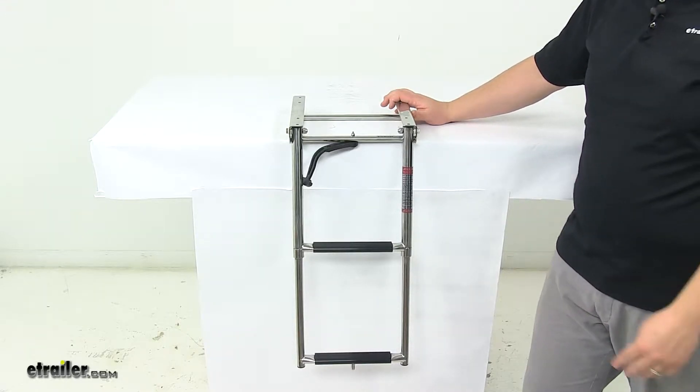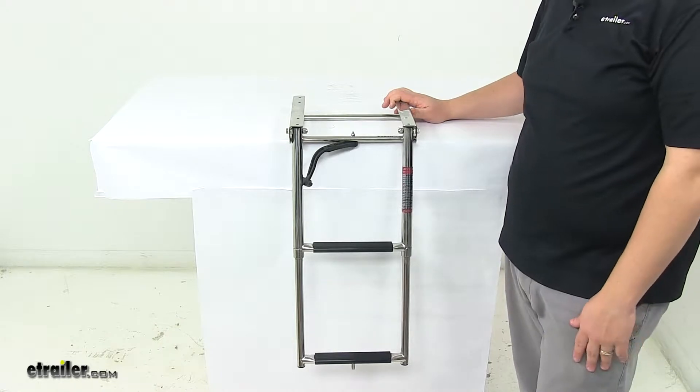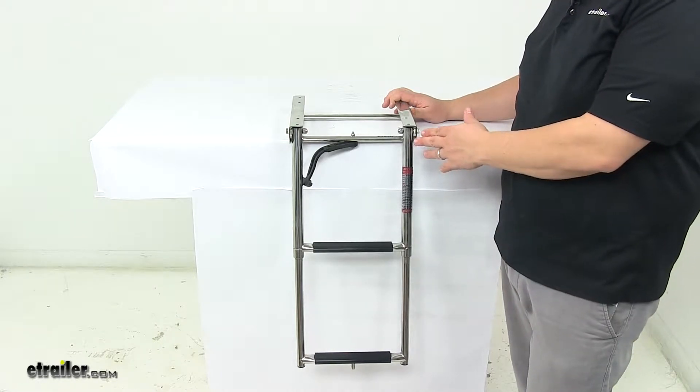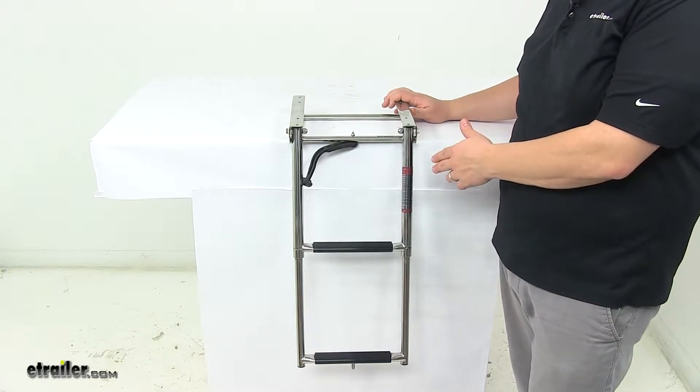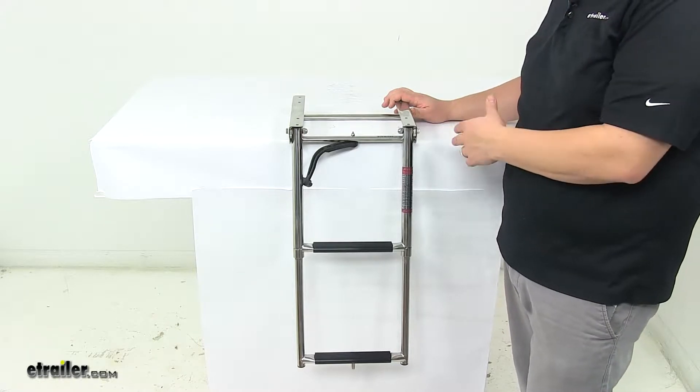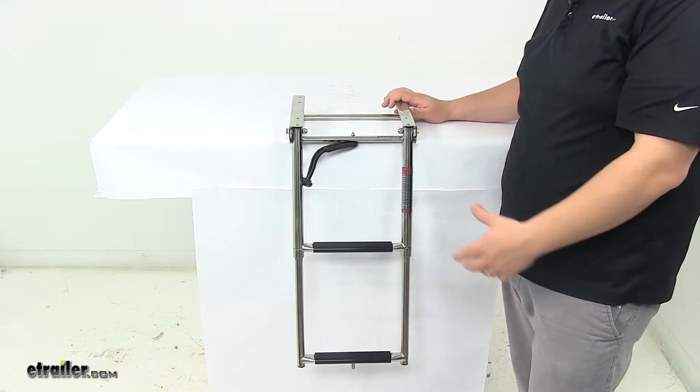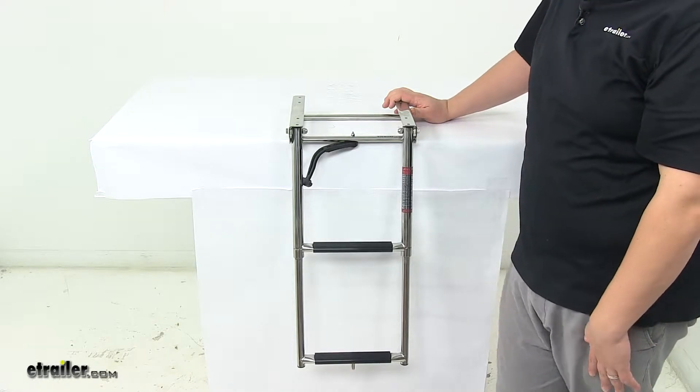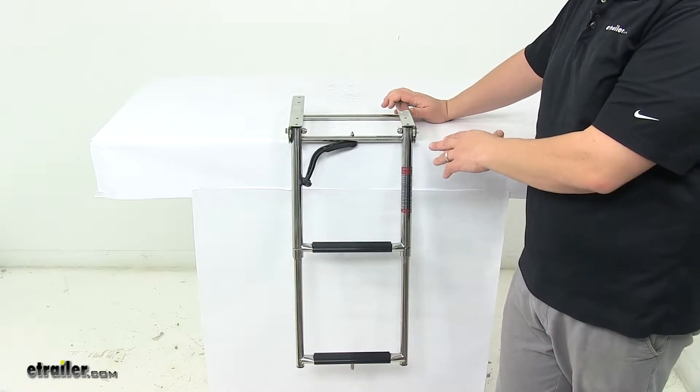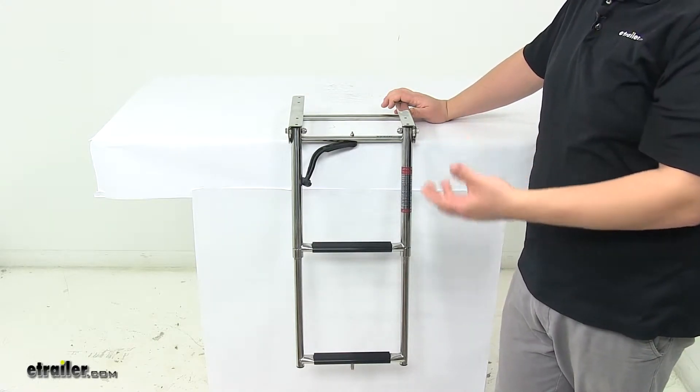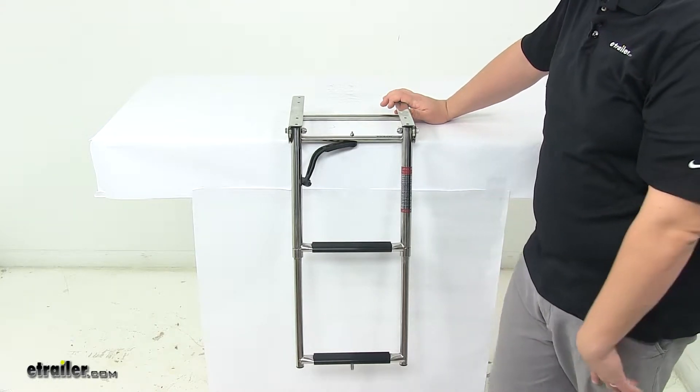Today we're taking a look at a sliding under platform pontoon boat ladder. This drop ladder provides an easy way to board your pontoon boat after a swim. It features the sliding pullout design, so the ladder mounts under the deck and collapses into the base under the boat for easy out-of-the-way storage, and then it pulls out and telescopes down when you're ready to use it.